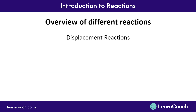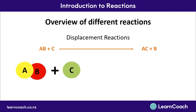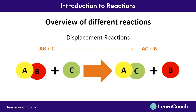The third reaction type is a displacement reaction. A displacement reaction is defined by a single element displacing another element from a compound. Here, the singular element C displaces element B from its AB compound, forming a new compound AC and leaving B as a singular element on its own.